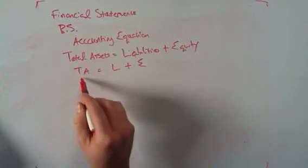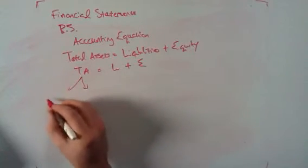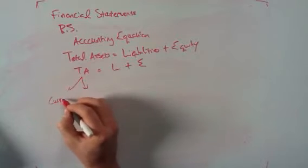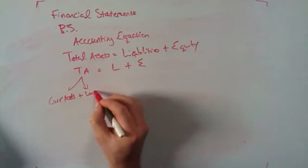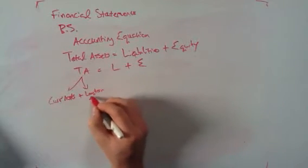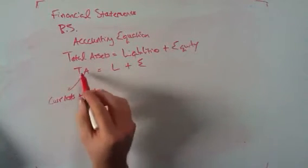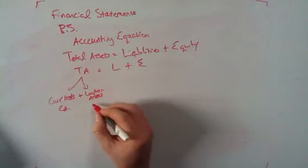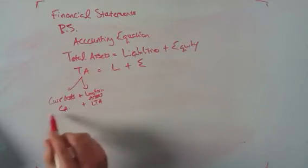We can further break that out and ask what is total assets. Well, total assets is our current assets plus our long-term assets. So: TA equals CA plus LTA.